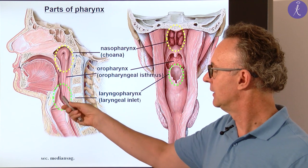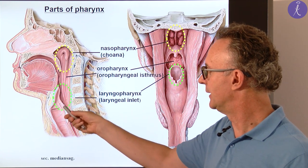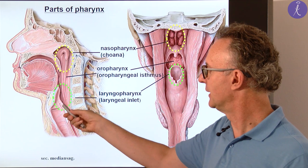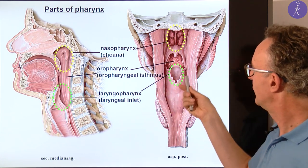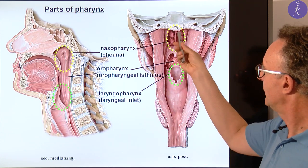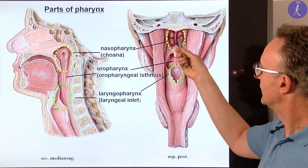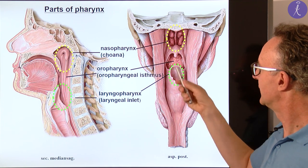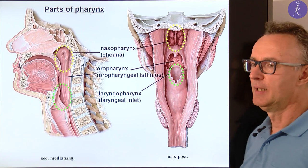The laryngopharynx includes the laryngeal inlet. In the posterior view you see the same: the nasopharynx, the oropharynx, and the laryngopharynx.